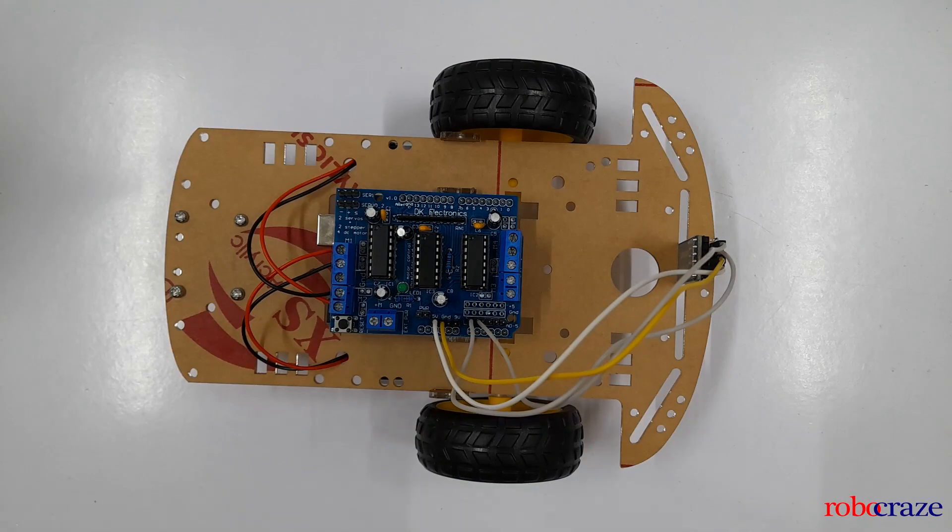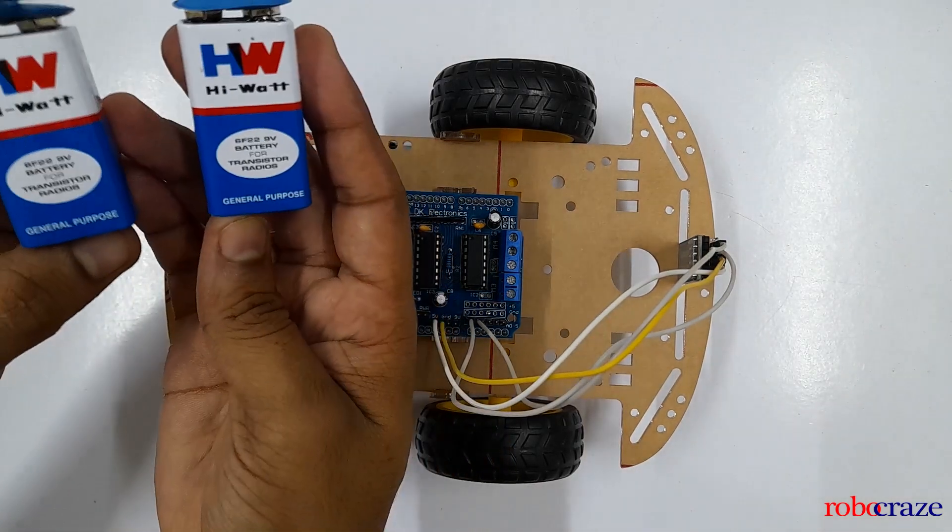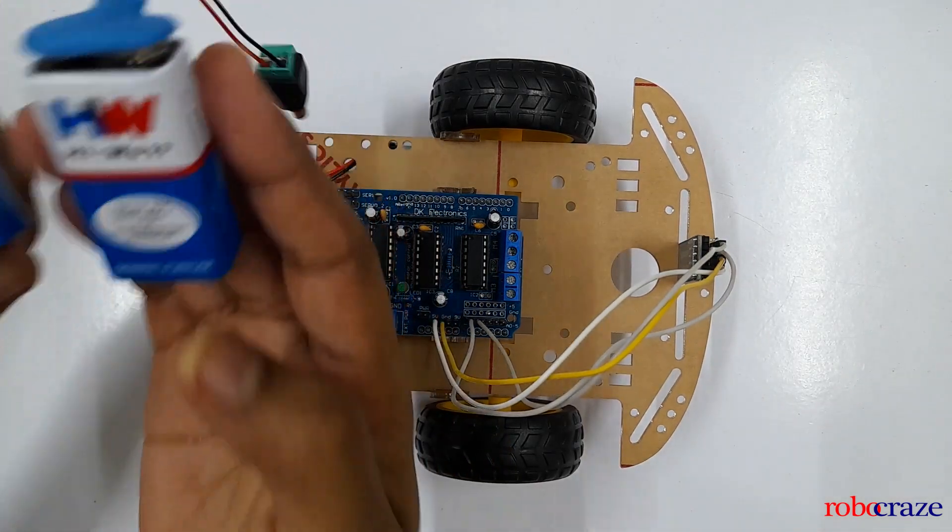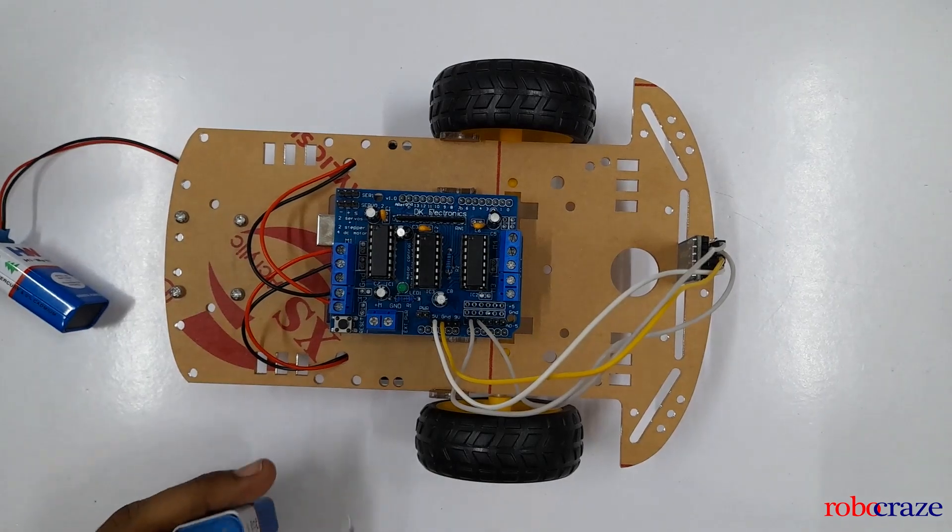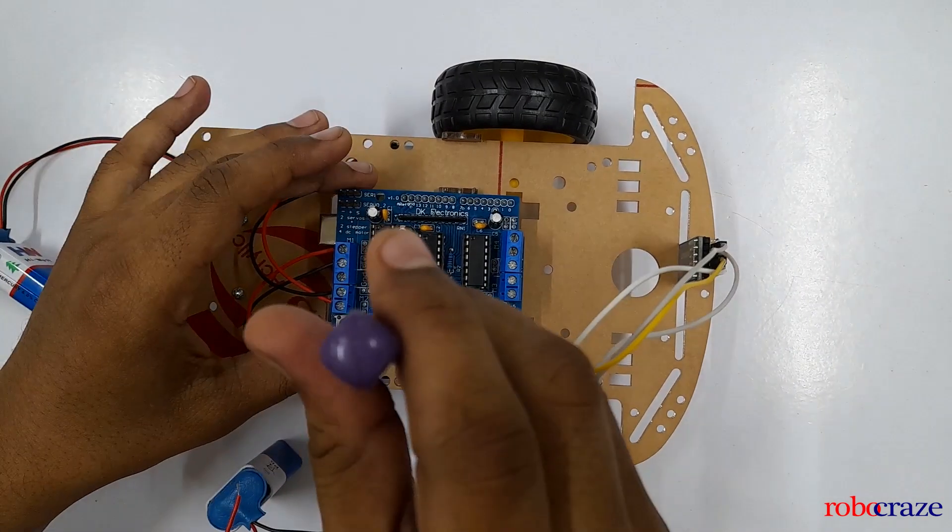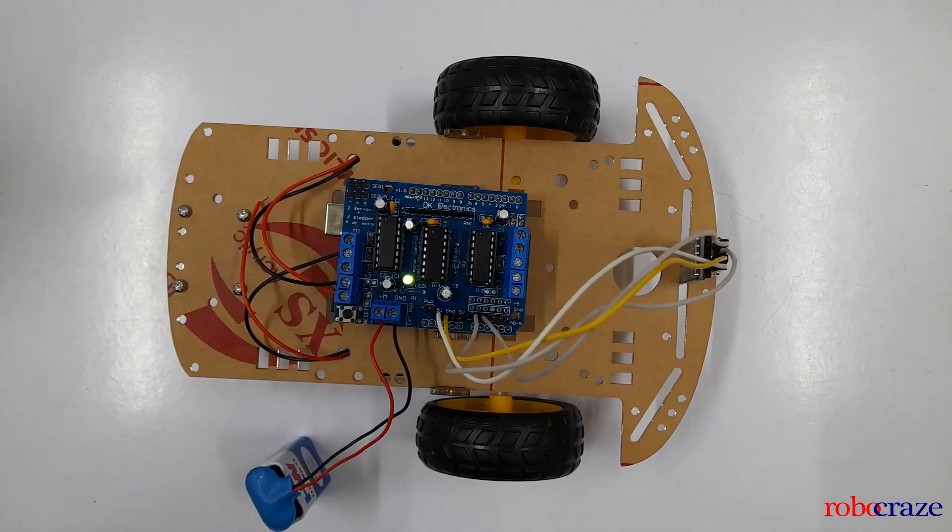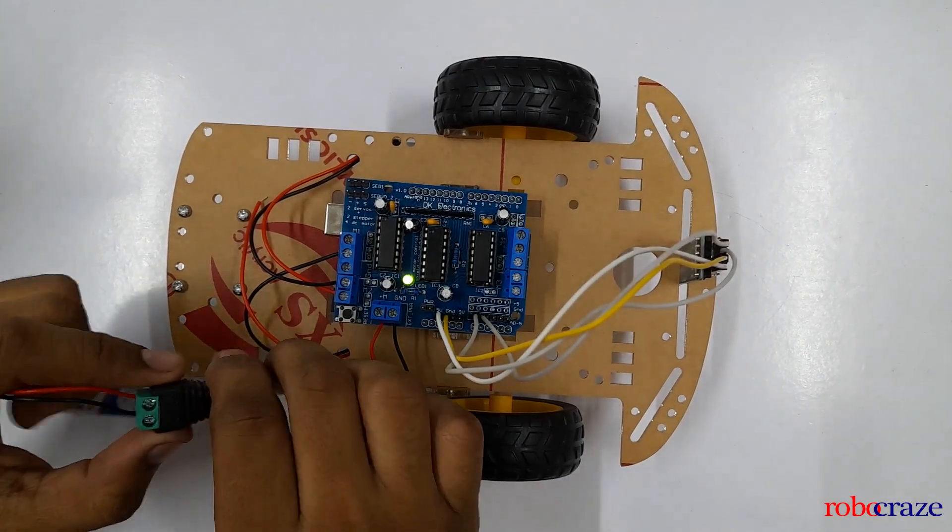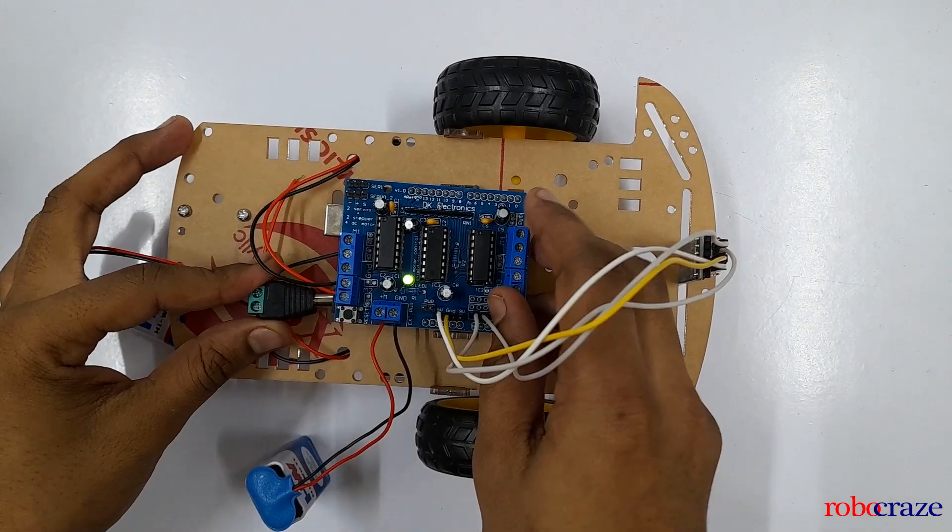Next we'll be connecting two 9 volt batteries for powering the driver and the Arduino. First we'll be connecting it to the motor driver. After you connect the battery, this LED will start glowing. Next we'll have to power the Arduino using this jack. We'll just insert it here.